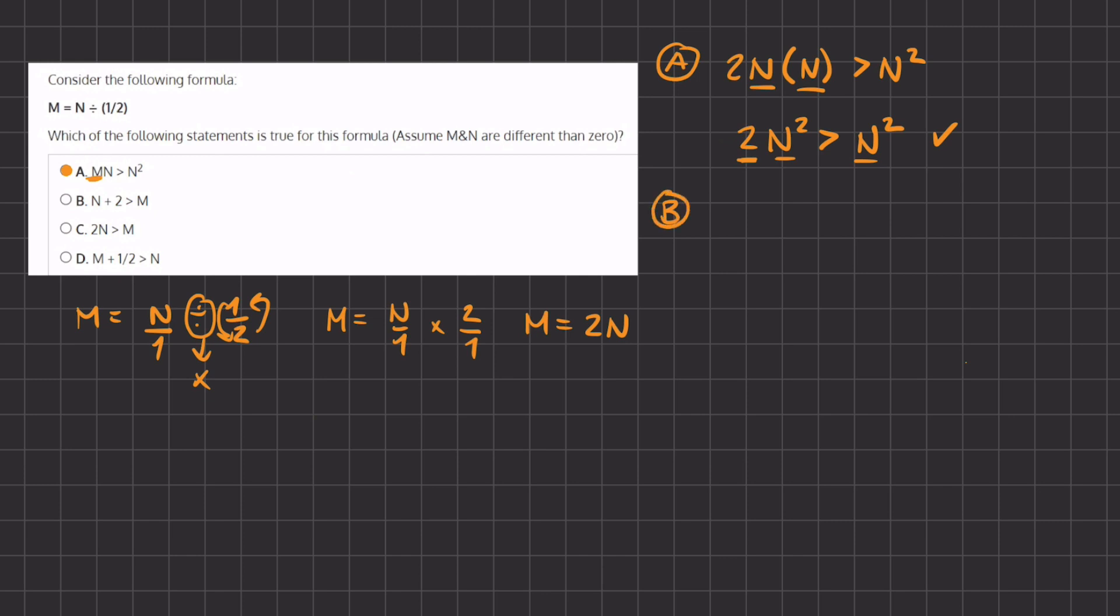Let's see what B states. M plus 2 is greater than N. So if we plug in the value for M, we have 2N. Now we can subtract N on both sides, and we are left with 2 is greater than N.